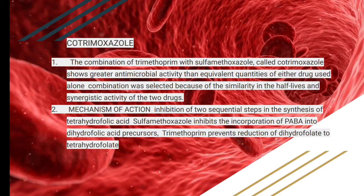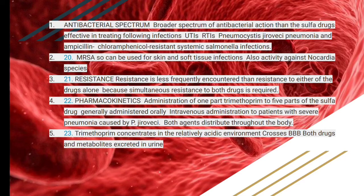Co-trimoxazole — the combination of trimethoprim with sulfamethoxazole — has greater antimicrobial activity than equivalent quantities of either drug used alone, due to their similar half-lives and synergistic activity. Mechanism of action: inhibition of two sequential steps in the synthesis of tetrahydrofolic acid. Sulfamethoxazole inhibits the incorporation of PABA into dihydrofolic acid, and trimethoprim prevents the reduction of dihydrofolate to tetrahydrofolate. The antibacterial spectrum and resistance are the same as for the individual drugs, but the combination provides a greater effect.